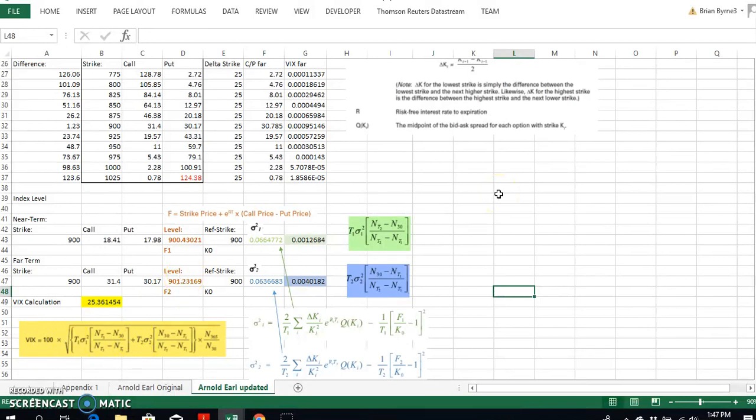So the VIX, if you like, is an estimate of how pricey options are. The VIX is implied volatility but not estimated using any specific model, and definitely we're not employing here Black-Scholes.